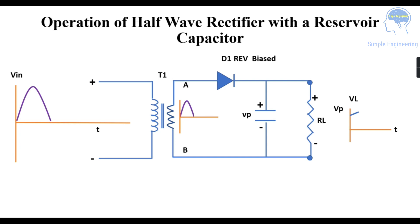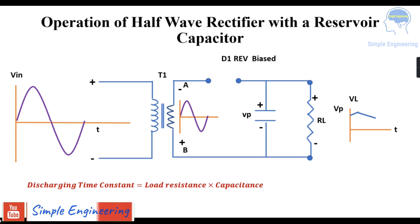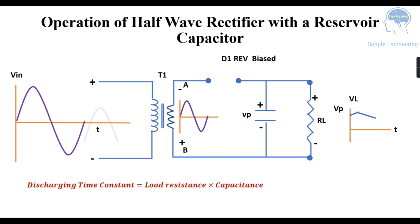In the negative half cycle, terminal A is negative and terminal B is positive, so the diode is reverse biased and acts as an open circuit. There is no current flow through the circuit when the diode is reverse biased. The discharging time constant equals the load resistance multiplied by the capacitance. Then it switches back to the positive half cycle, and the process continues: the diode is forward biased again, giving repeated charging and discharging.